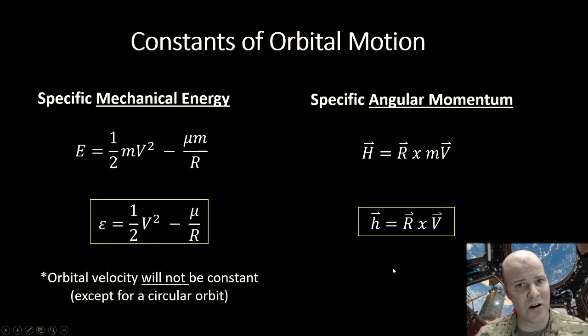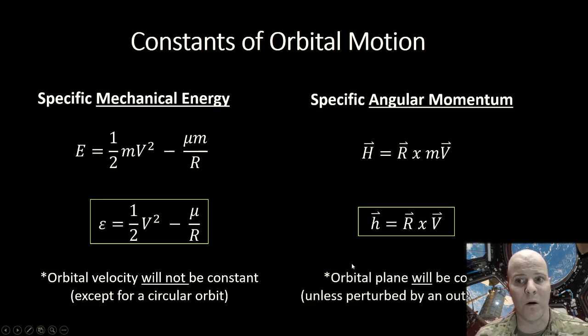What you might recall from crossing vectors is that when you cross two vectors, you end up with a third vector that is perpendicular or orthogonal to both of the subsequent vectors that went into that. So in this case, our r vector and our v vector both lie in the orbital plane, so our h vector will be orthogonal to that plane, and so it will actually define our orbital plane.